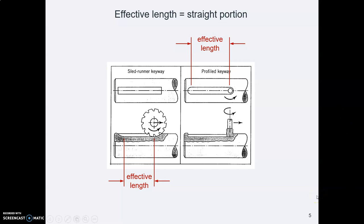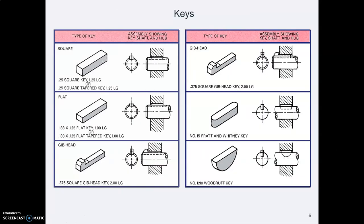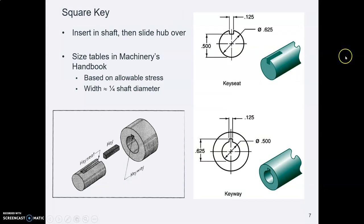I worked at one company where we had to dimension the minimum effective keyway length on the drawing — the machinist often made it longer, but we specified the minimum because a key was going to be placed there. Keys come in various shapes, and the one we'll use for our gear is a plain square key. There'll be a slot — basically half a square, not quite — in the shaft and a mating slot in the hub. The shaft goes into the hub, and the key fits into the bottom of the shaft keyway and the top of the hub keyway, so those two slide together.